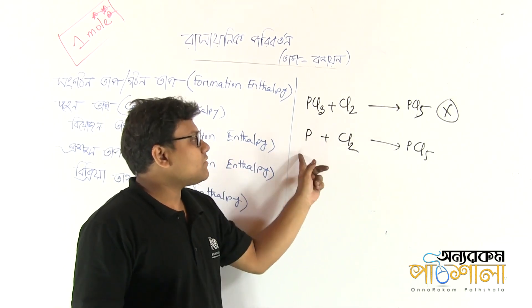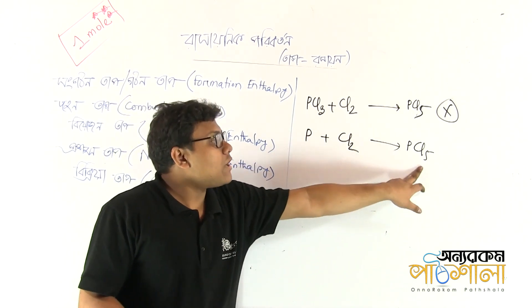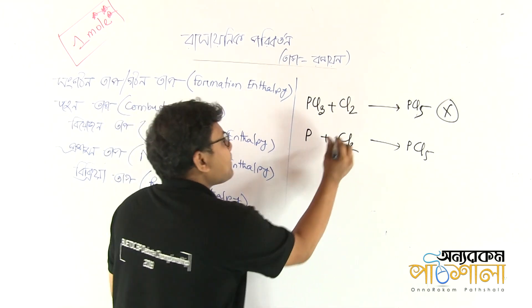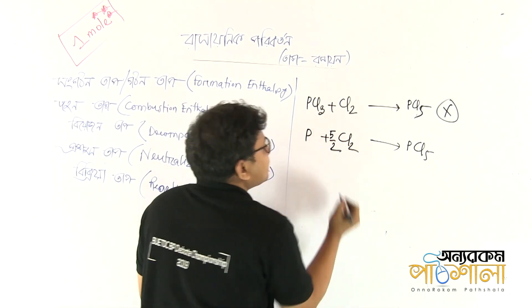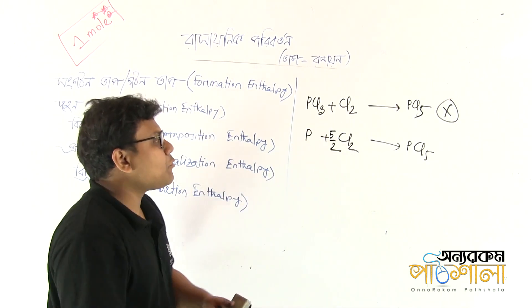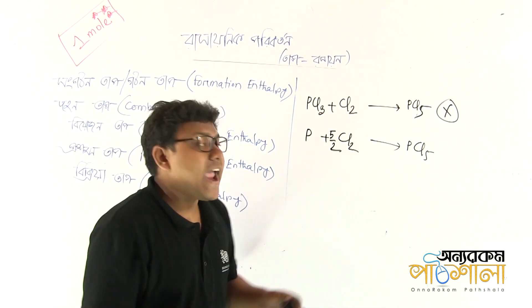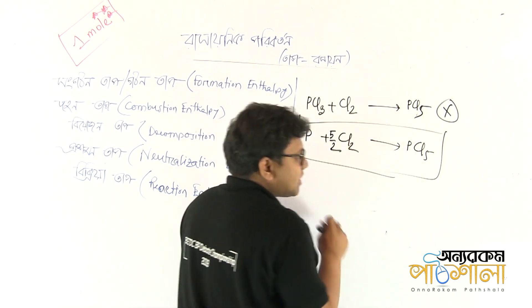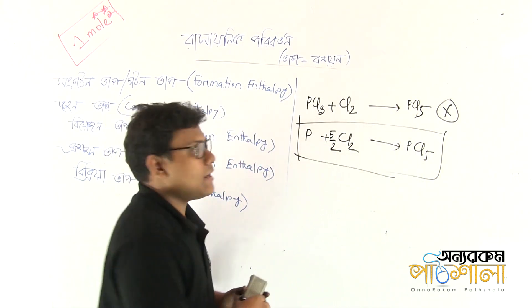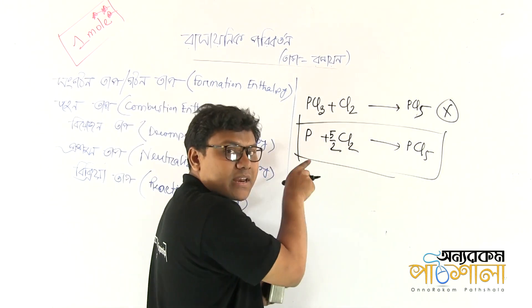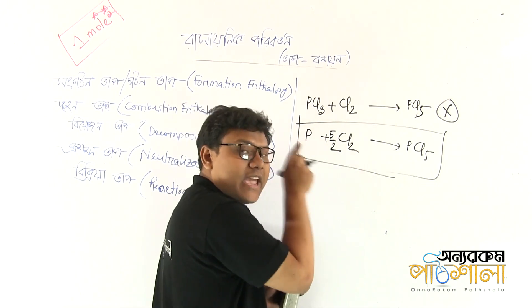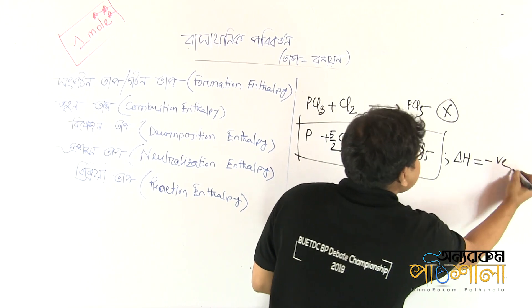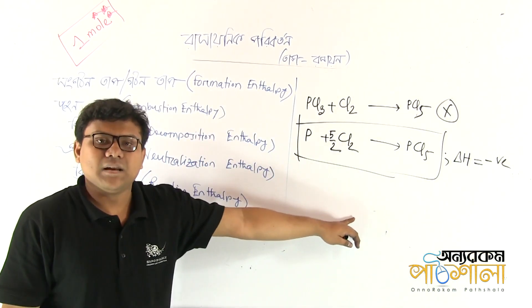Phosphorous and chlorine (Cl2) — what is the solution? This is the formative reaction, and this is the reaction enthalpy. We need to get this reaction so we can get the enthalpy. The cell is the formation enthalpy.